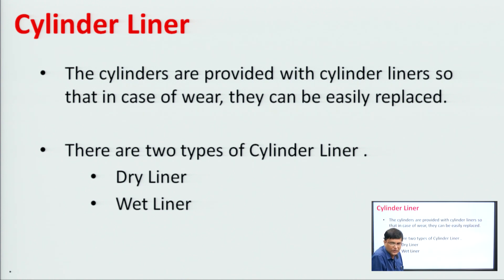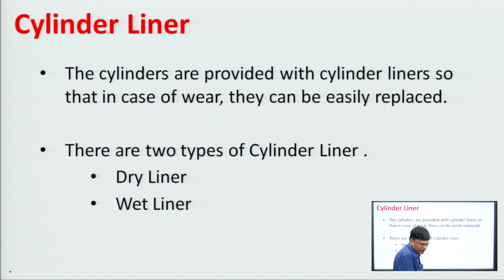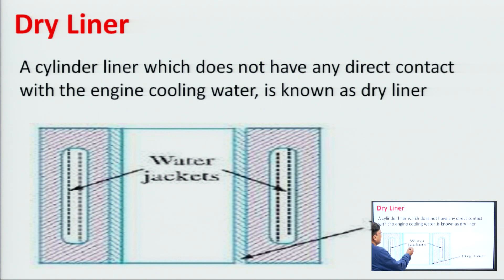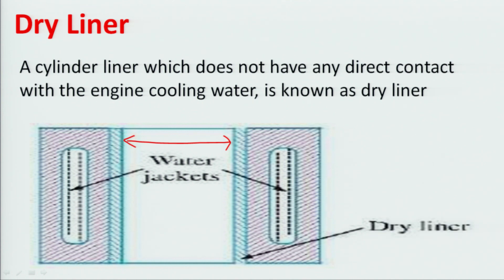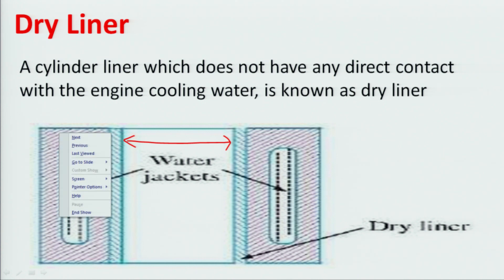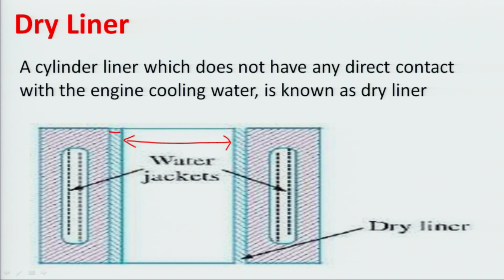Now, if the water jacket provided for cooling is not in contact with the liner, that is called a dry liner. As you can see in this slide — this is the cylinder, inside which compression of the gas mixture (petrol plus air, or air plus diesel) takes place. Here is the water jacket, and here is the liner — the water jacket is not in touch with this liner. So this is the dry liner.